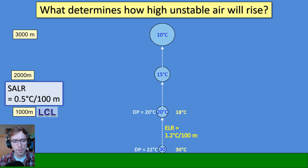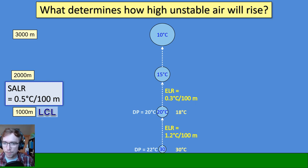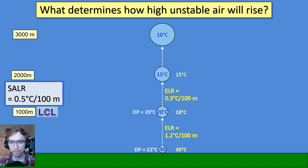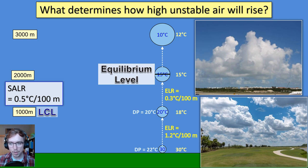What determines how high unstable air will rise? In the absolutely unstable example with an ELR of 1.2°C per 100m, the environmental lapse rate can change as we rise. If it changes to 0.3°C per 100m, we hit the level of free convection at 15°C — that's our equilibrium level — and above that the parcel is slightly cooler than surrounding air. It is this equilibrium level that drives the base and tops of clouds.